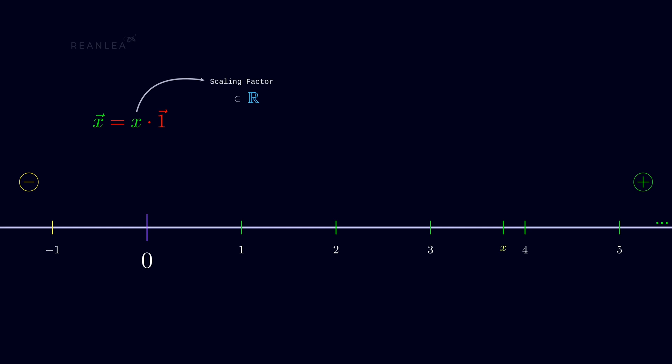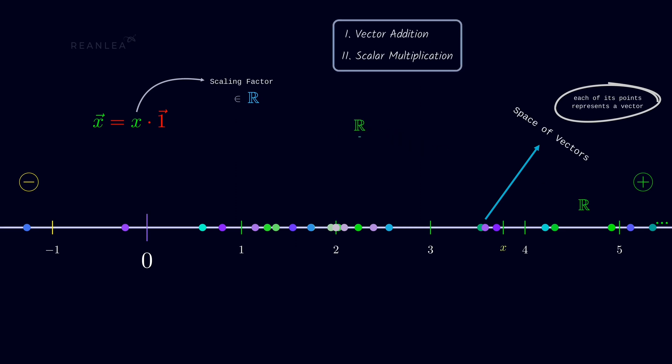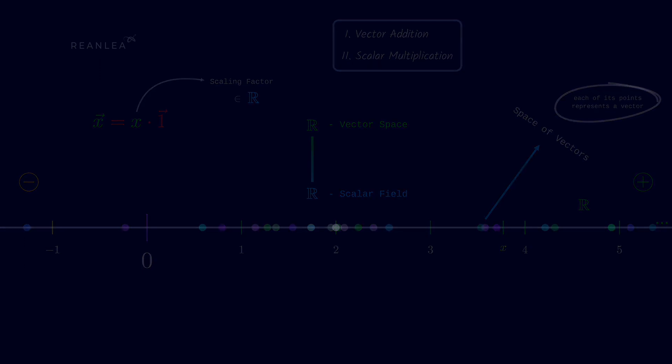We can think of the real axis — the set of all real numbers — as a collection of vectors, where each static point represents a vector. We have seen two operations: vector addition and scalar multiplication, where the scalars are from ℝ considered as the set of all real numbers. That's how we can consider ℝ to be a vector space over the scalar field ℝ. Since vector operations are true for all real numbers, and many other number systems serve equally well, we list the properties of the scalars needed — and this leads to the concept of a field.